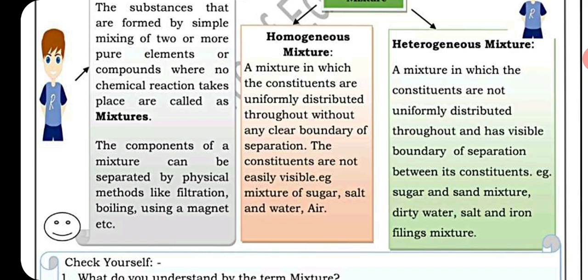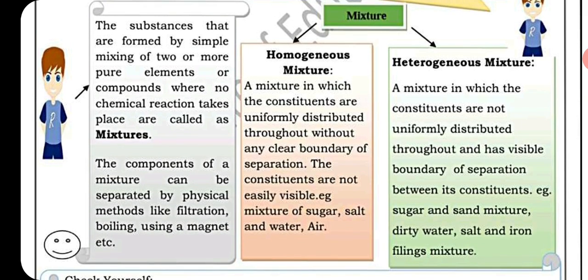A homogeneous mixture is one in which the constituents are uniformly distributed throughout, without any clear boundary of separation — the constituents are not easily visible. Examples include a mixture of sugar, salt, and water, and air. In a homogeneous mixture, the constituents are spread uniformly and do not appear separate from any direction.